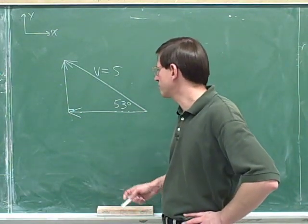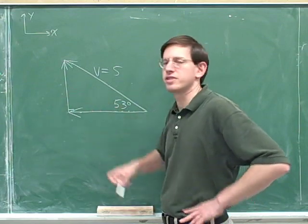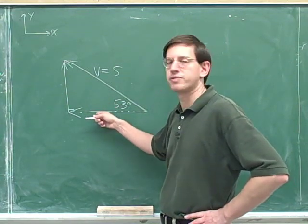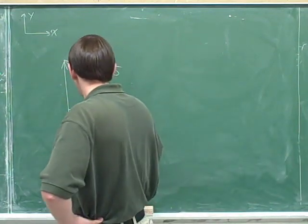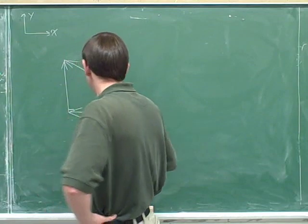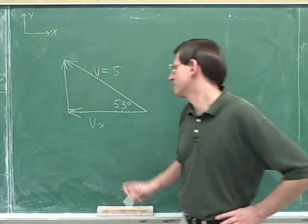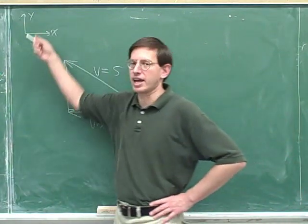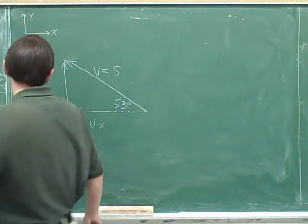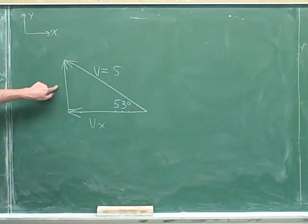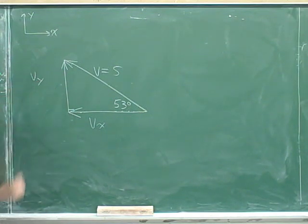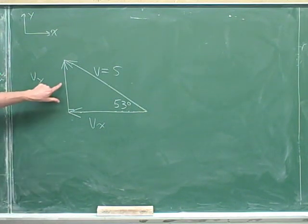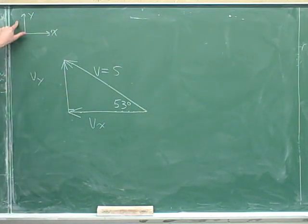Let's put in some reasonable symbols for these sides. A reasonable symbol for the horizontal side is V sub x, because this is the component parallel to the x-axis. And a reasonable symbol for the vertical side is V sub y, because this is the component parallel to the y-axis.